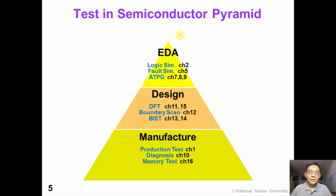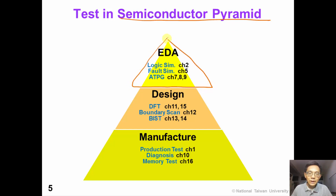In this semiconductor pyramid, we can divide our topics into three parts. On the top of this pyramid, we see the EDA-related topics. For fault simulation and logic simulation, you can see chapters two and five. For the ATPG automatic test pattern generator, you can refer to chapters seven, eight, and nine.